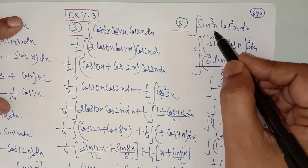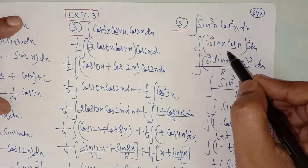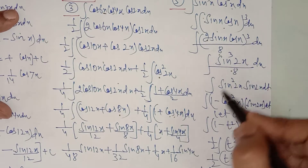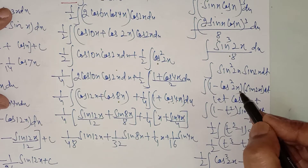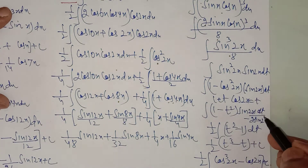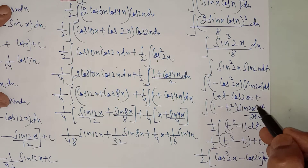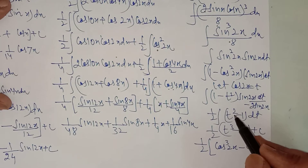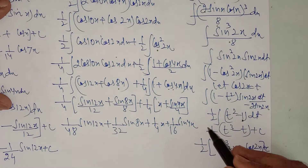Question number 5: it is sin³x · cos³x. You can write sin x · cos x as (sin 2x)/2, so (sin x cos x)³ = (sin 2x)³/8. This gives sin³2x/8. For the odd power, break it as sin²2x · sin 2x, write sin²2x = 1 - cos²2x, and let cos 2x = t so dt/dx = -2 sin 2x. The sin 2x cancels, giving -(1 - t²)/2. Integrating: t²/3 - t, then replace t = cos 2x. So this uses the trigonometric identities approach.